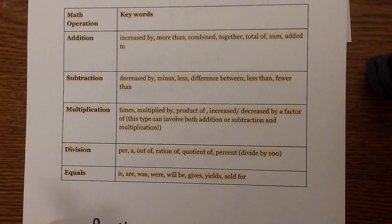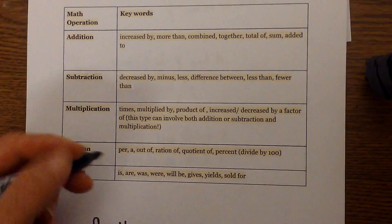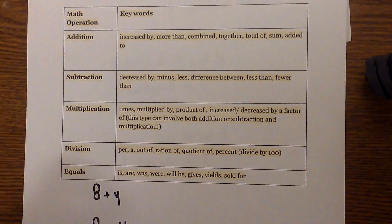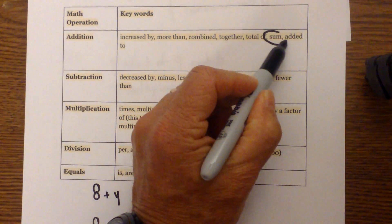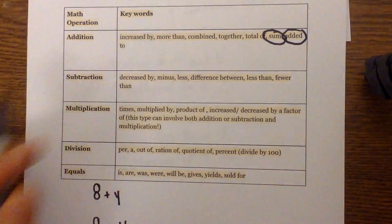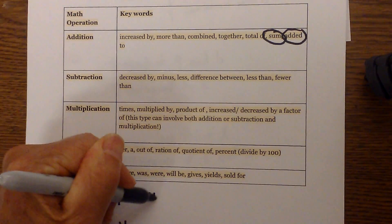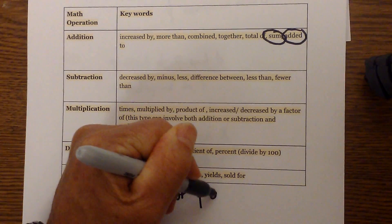I have this list of keywords here and I'm going to go ahead and work one example, and the example is I'll go eight plus y. Well I know I have addition so I can use sum, and I can use added to, so I'm going to do the sum of y added to eight.